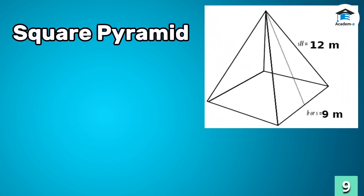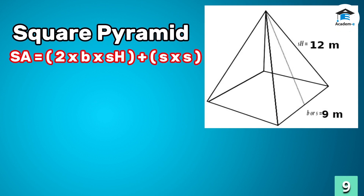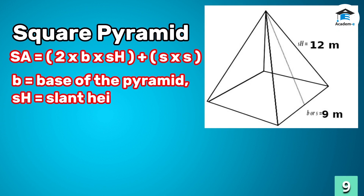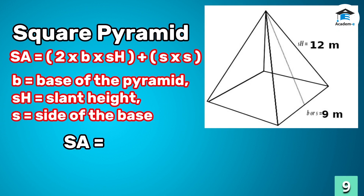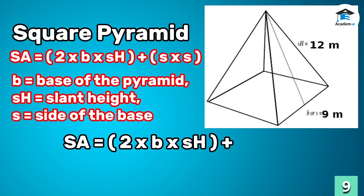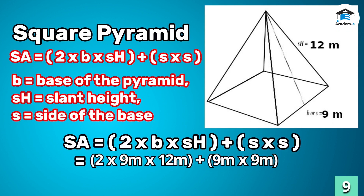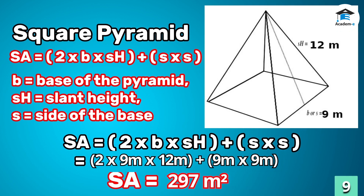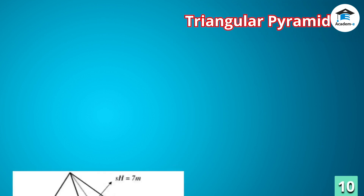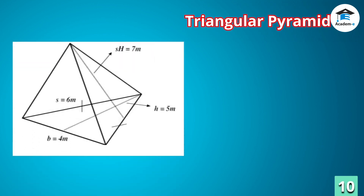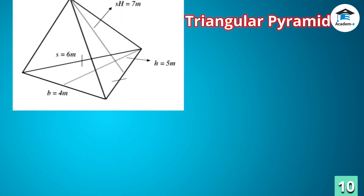Square pyramid: to get the surface area of a square pyramid, get the sum of the area of its triangular faces and the area of its square base. That is 2 times base times slant height, added to side times side. Therefore, the surface area of the square pyramid is 297 square meters.